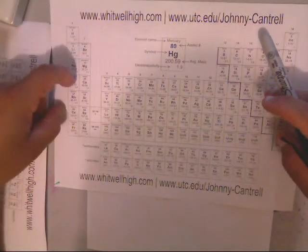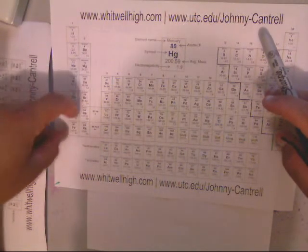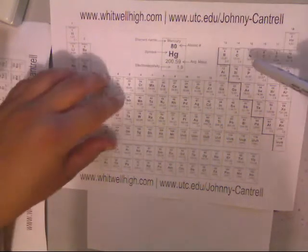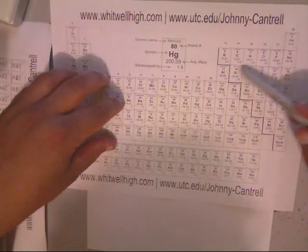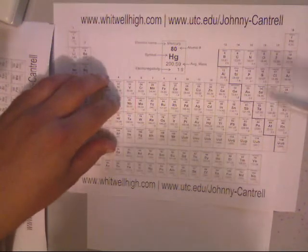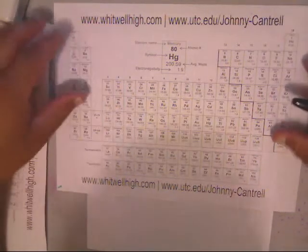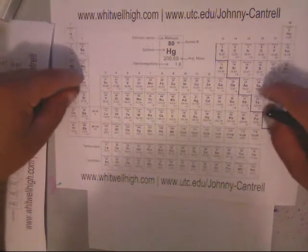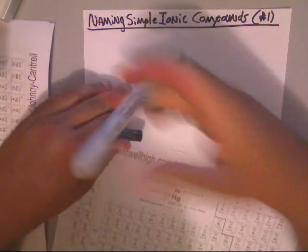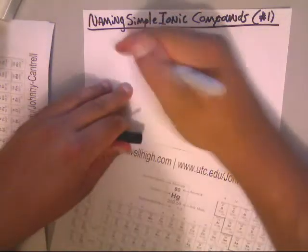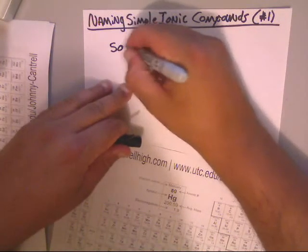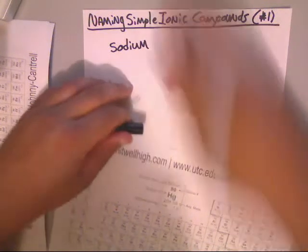We take elements like lithium, beryllium, sodium, magnesium, calcium, potassium, strontium, rubidium, cesium, barium, francium, and radium and put them with one of the non-metals or metalloids to make an ionic compound. Usually it's just the non-metals. We're going to name some simple ones, starting with sodium, which is Na.